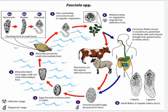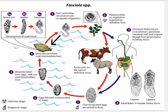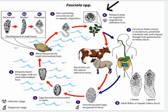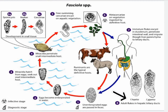Diagrammatic representation of the life cycle of Fasciola hepatica: unembryonated eggs are passed in feces of humans or sheep; eggs become embryonated in fresh water; miracidia hatch from the eggs and seek out the snail intermediate host, penetrating it. They convert into cercariae through the stages sporocyst and redia, then into free-swimming cercariae. The cercariae encyst on aquatic vegetation as metacercariae, which are ingested by the definitive host — humans or sheep. The immature flukes excyst in the duodenum, penetrate the intestinal wall, and migrate through the liver parenchyma to the biliary ducts, where adult flukes release eggs and the cycle repeats.